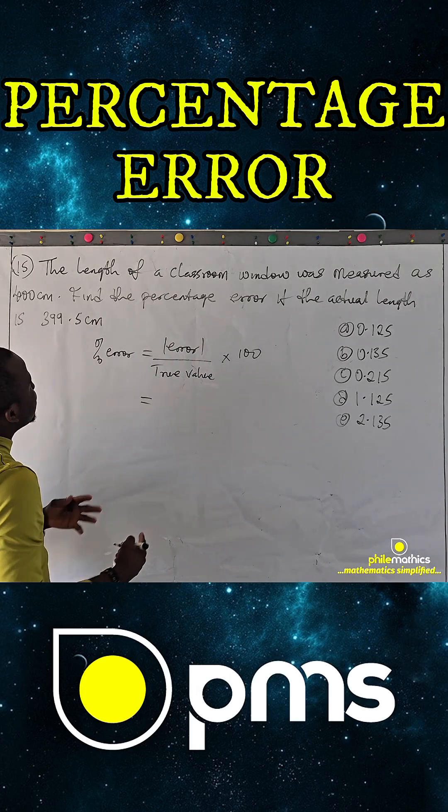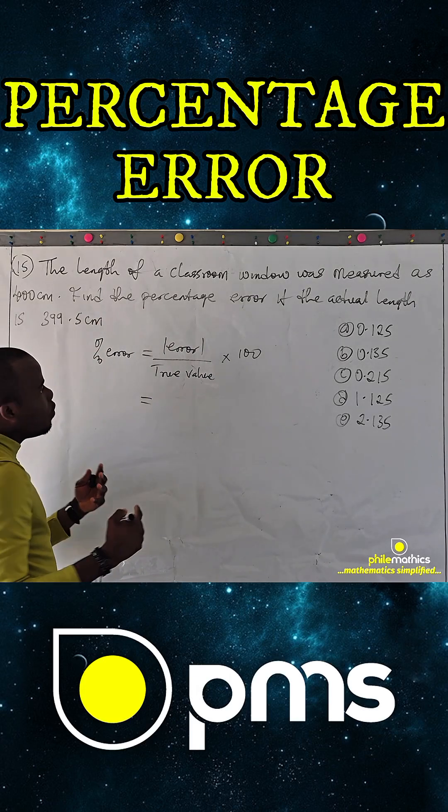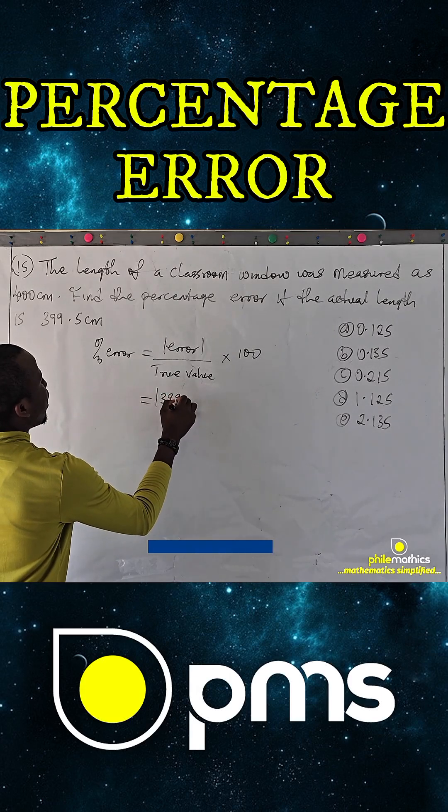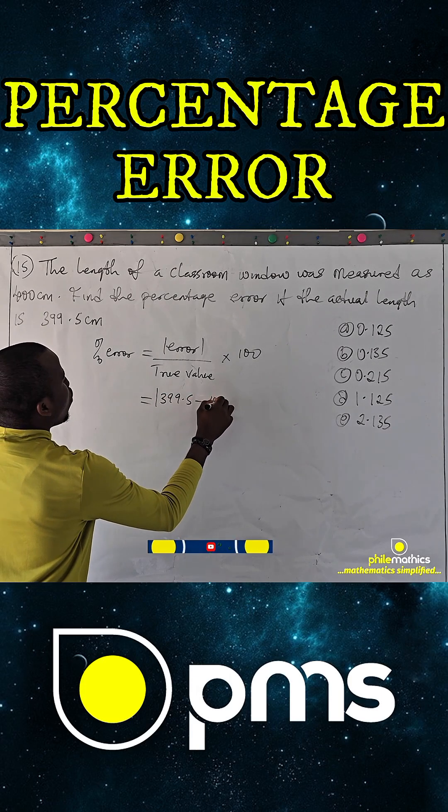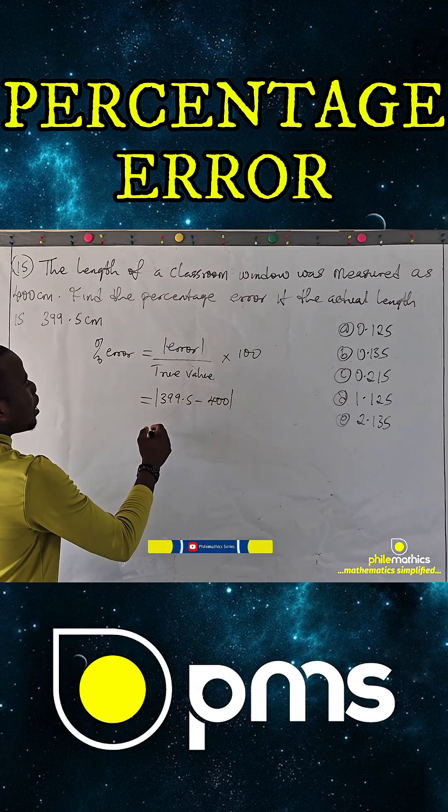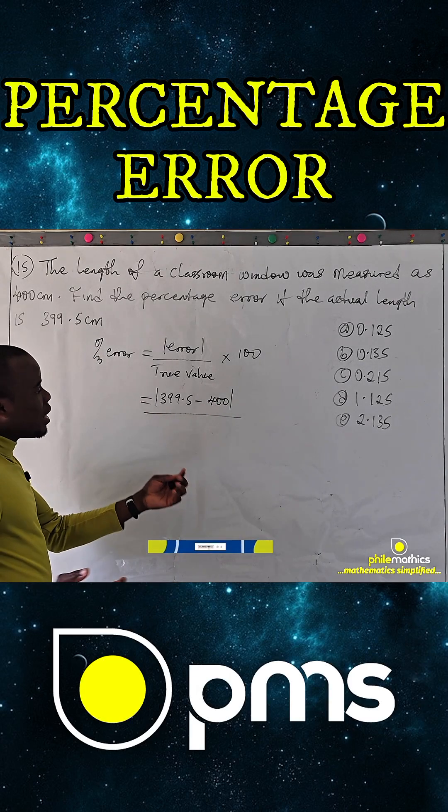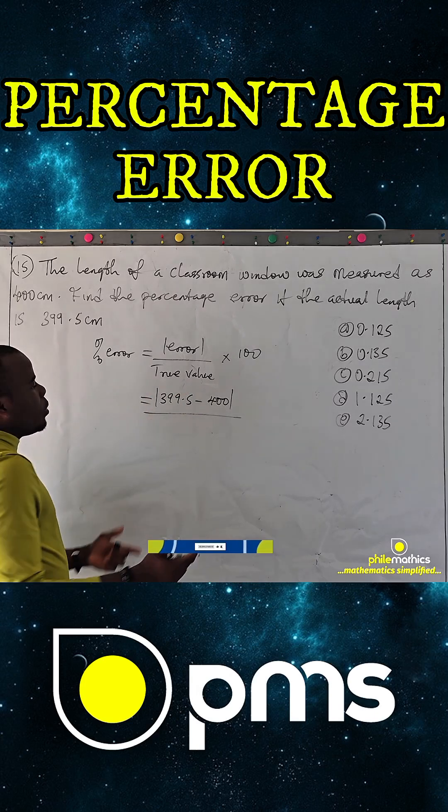So this is 399.5 minus 400. That is the essence of the absolute value. You could say 400 minus 399.5, so in that case the absolute value will not be necessary.